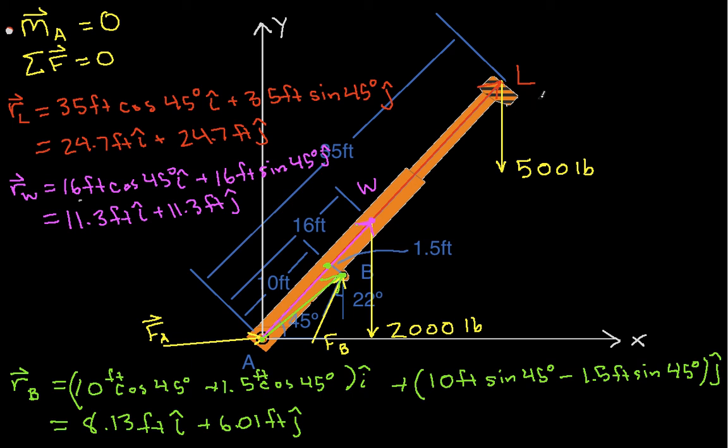We have that the force due to the load will be minus 500 pounds j-hat, because it's basically a vector going straight down. Let's see, we have the force due to weight, so the weight will be minus 2,000 pounds j-hat. Okay. So those were pretty easy because we have forces going straight down.